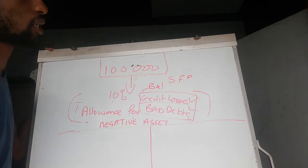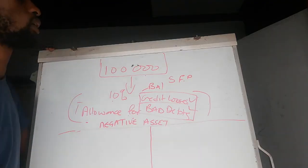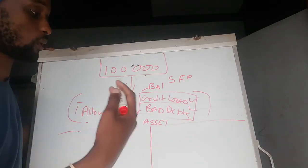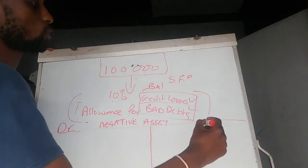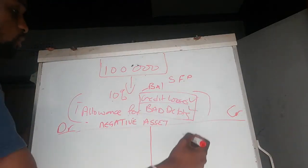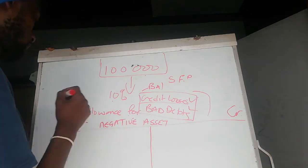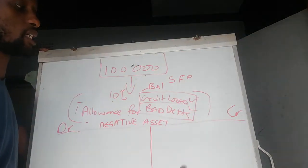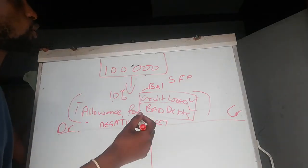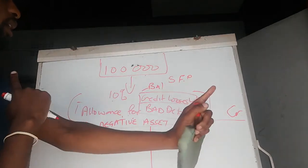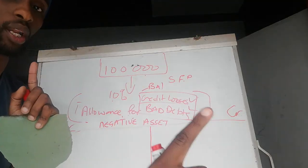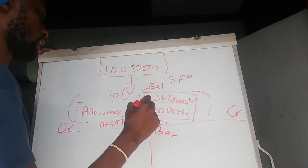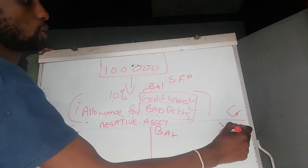A negative asset simply means it doesn't operate the same way a normal asset would. Where an asset increases on the debit side, a negative asset increases on the credit side. Where an asset decreases on the credit side, a negative asset decreases on the debit side. So it behaves opposite to a normal asset — whatever direction a normal asset goes, a negative asset goes the other way.